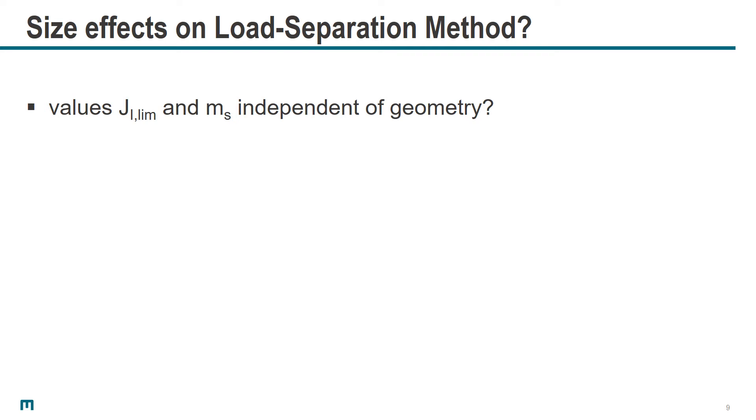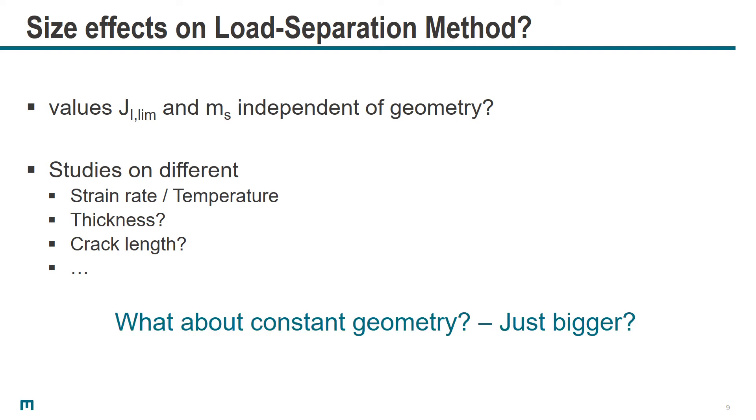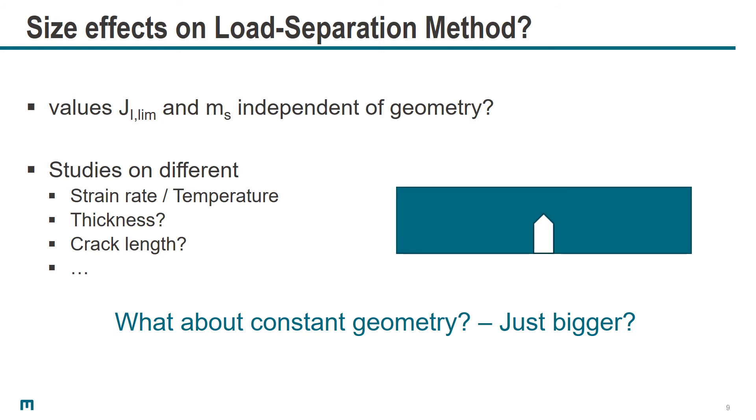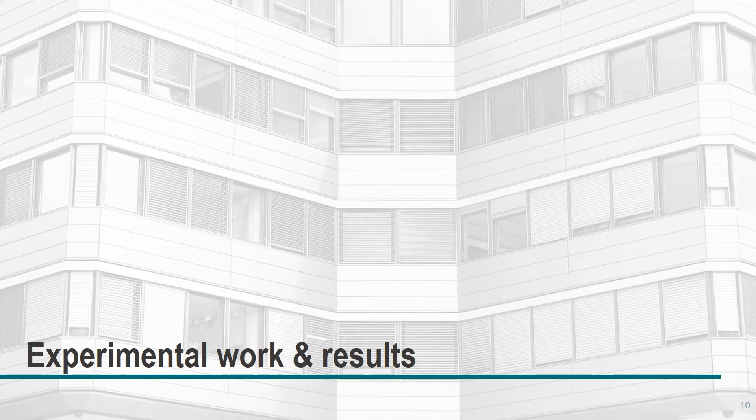These round-robin results show that J_1 Lim and MS appear to be quite nice values regarding repeatability and reproducibility. But the question is, what happens with those values if we scale up the geometry, for example testing bigger or smaller specimens? There are already studies regarding strain rates, temperature influences, or changing specimen thickness. But what about if we keep the geometry itself constant, so the ratios between different geometry values such as width, thickness, and initial crack length, and just make the specimen bigger? What happens then with those values?